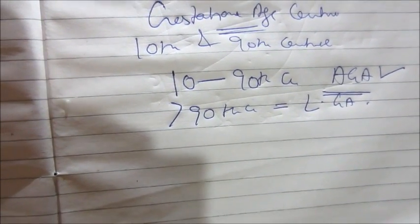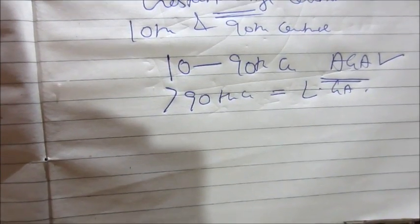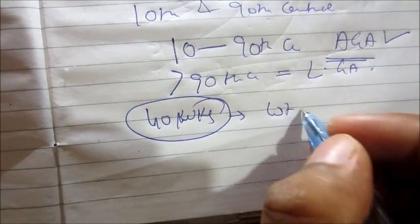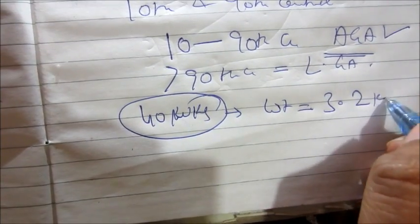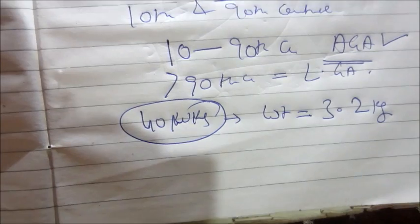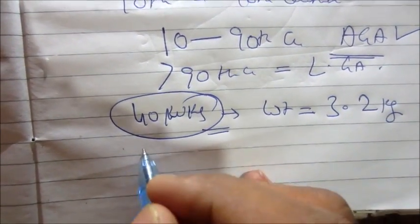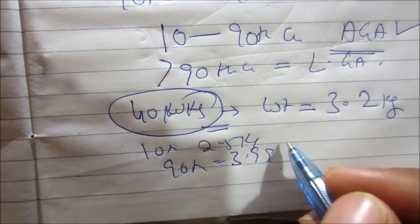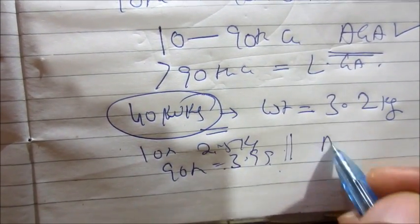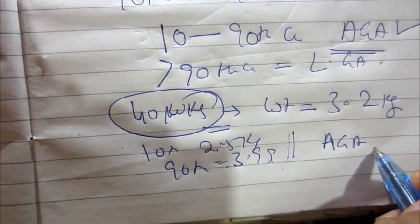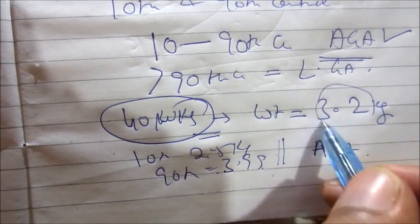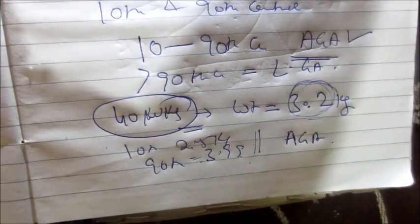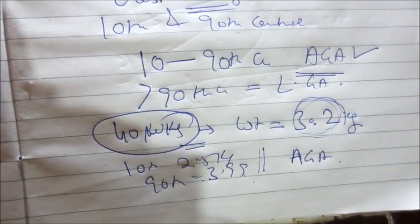For example, a baby has taken birth at 40 weeks and the weight of the baby is around 3.2 kg. We know that it is a term baby. For a term baby, the 10th centile is 2.5 kg and the 90th centile is 3.99 kg. Since 3.2 kg falls between the 10th and 90th centile, the baby is said to be appropriate for gestational age. If the baby were less than 2.5 kg it would be SGA, and if greater than 4 kg it would be LGA.